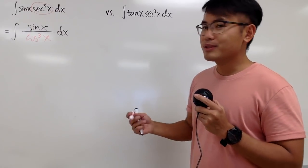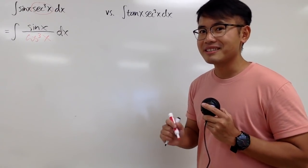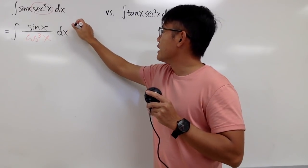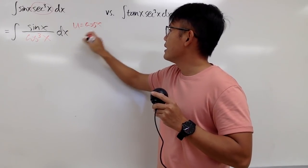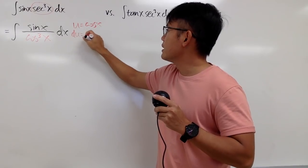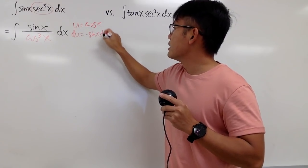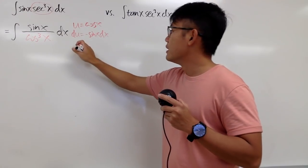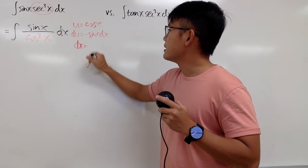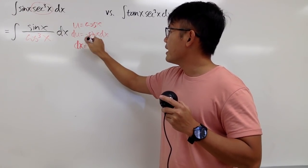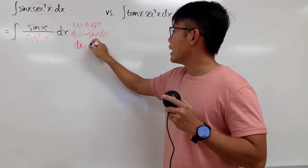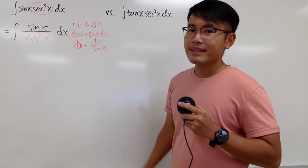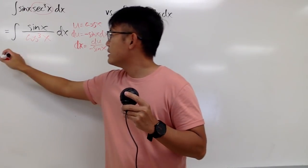Here I'm going to let u equal cosine x — just a single power. So u equals cosine x, and du is negative sine x dx. Isolating dx, I divide both sides by negative sine x, so dx equals du over negative sine x.